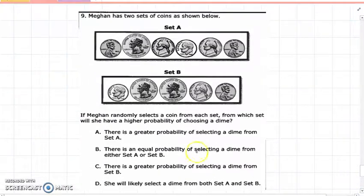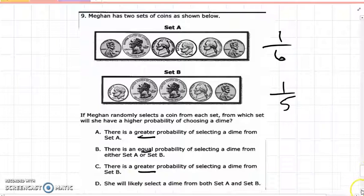I'm going to do number nine. Megan has two sets of coins shown below. She randomly selects a coin from each set. From which set will she have a higher probability of picking a dime? Here we have one, two, three, four, five, six choices. How many are dimes? One. This one has five choices and one is a dime. Greater? Equal? Are they equal to each other? Well, they have the same denominator. Greater, which is greater? So think about converting to decimals if you want. Let me figure that out.